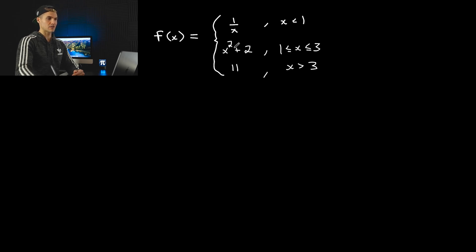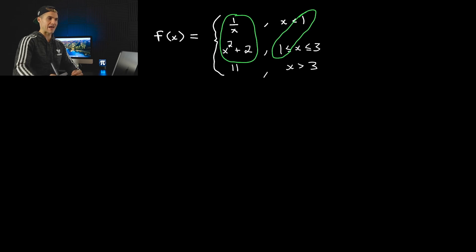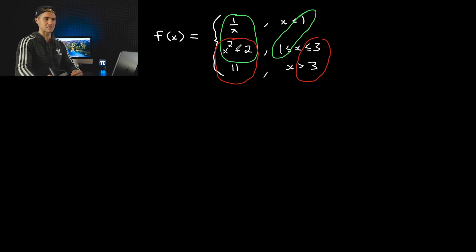Notice that we have two meeting points for these pairs of functions. The functions 1 over x and x squared plus 2 are meeting at x equals 1. And then x squared plus 2 and 11 are going to meet at x equals 3. So the function in the middle of both of them is x squared plus 2.